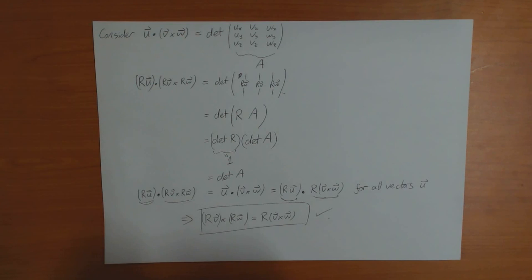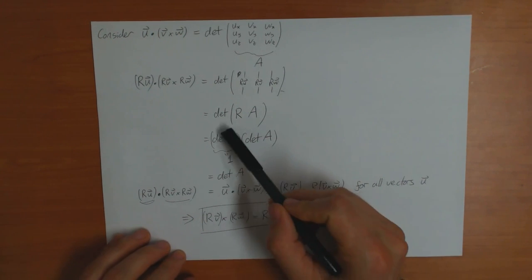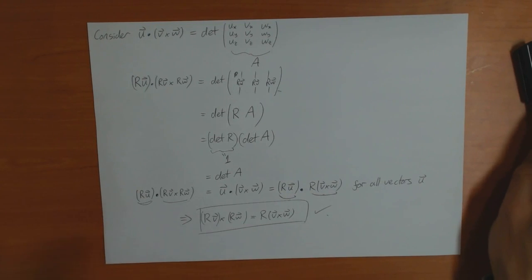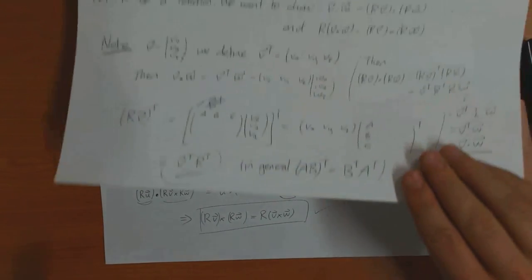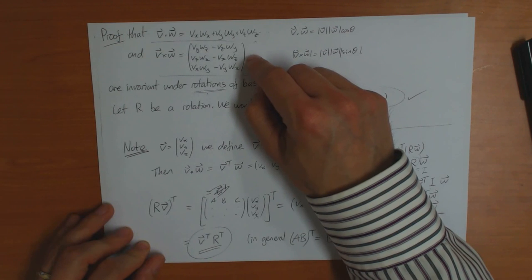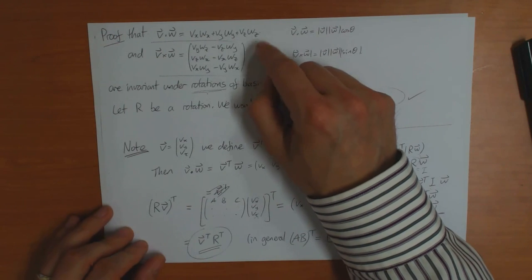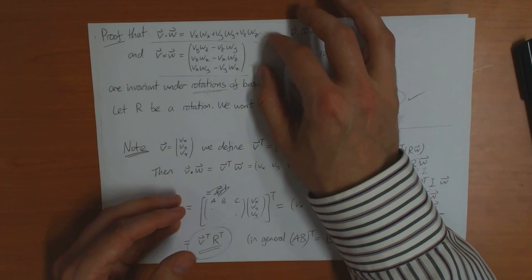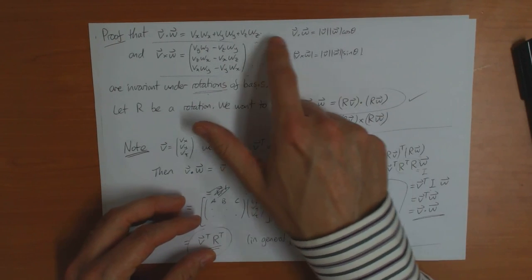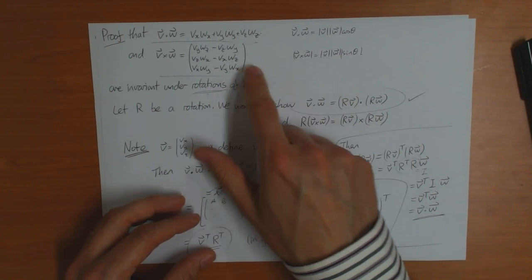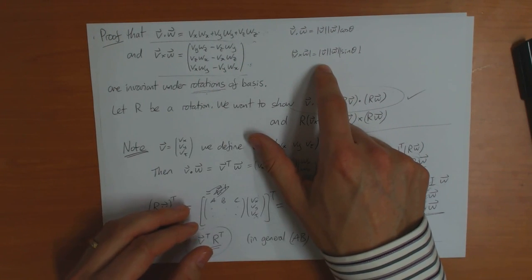This shows how you can use the orthogonality of the rotation matrix R to prove that the coordinate formulas for the vector and scalar products are invariant under rotations of the basis. And we've already seen that using this invariance, you can prove that the two definitions of scalar product are the same and the two definitions of vector product are the same.